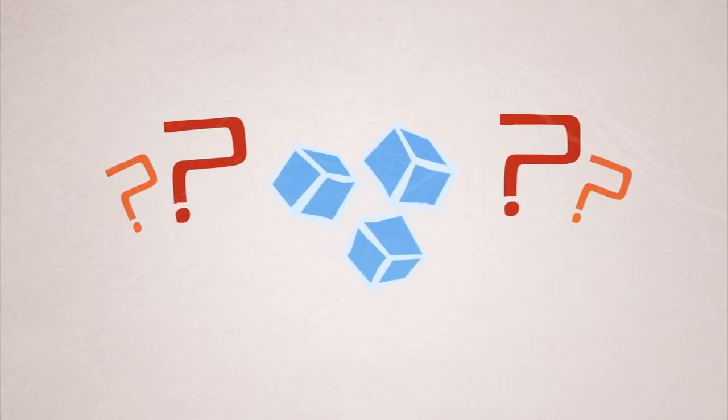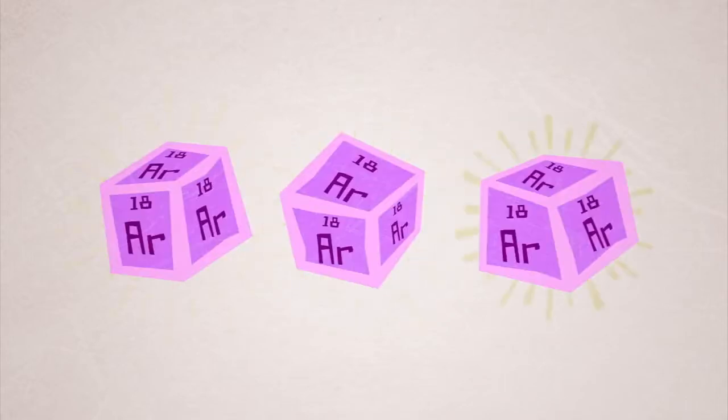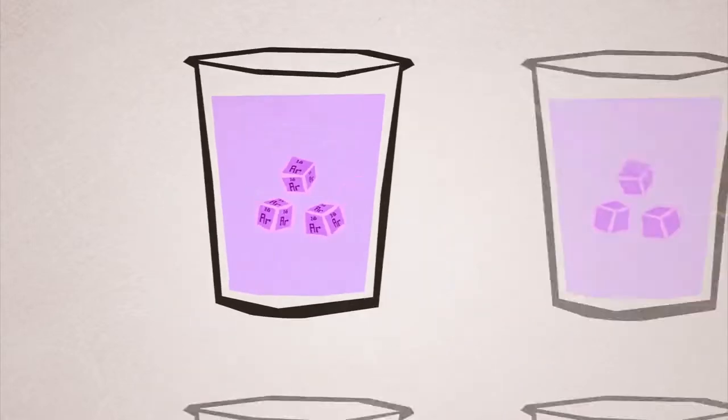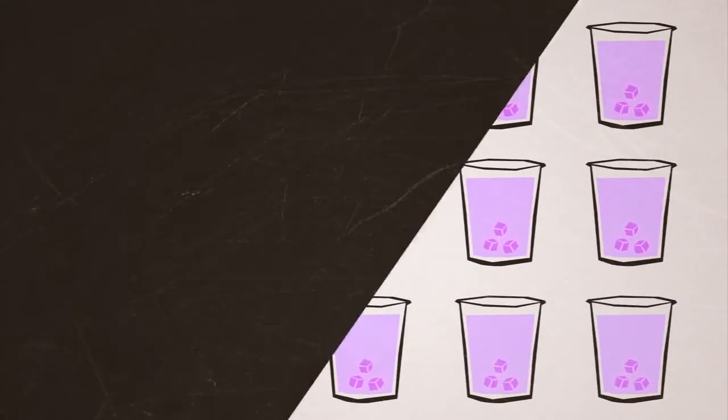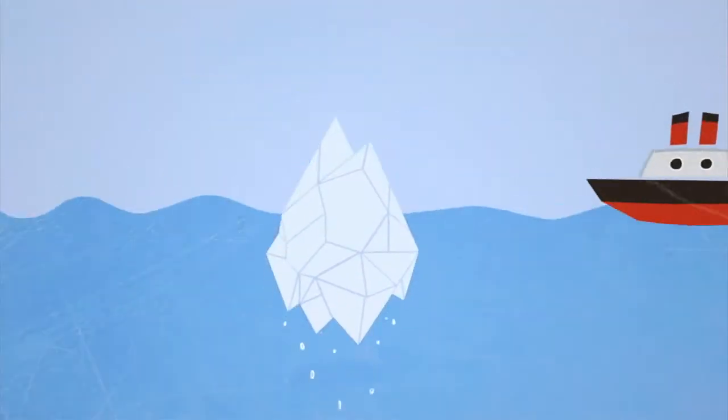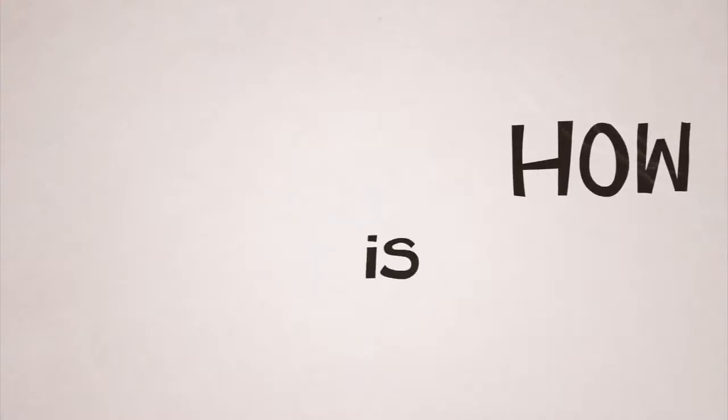Why do these ice cubes float? If these were cubes of solid argon in a cup of liquid argon, they would sink, and the same goes for most other substances. But solid water, aka ice, is somehow less dense than liquid water. How's that possible?